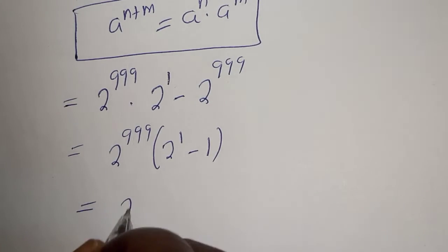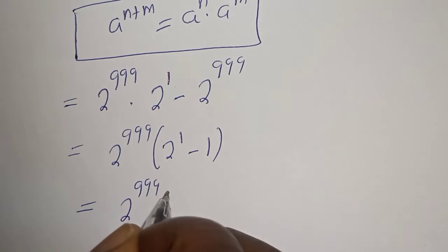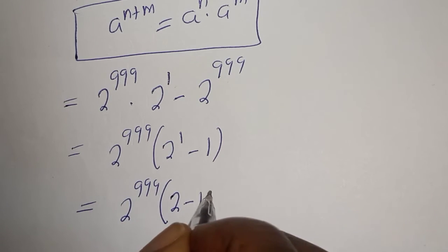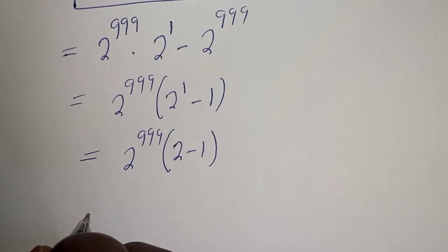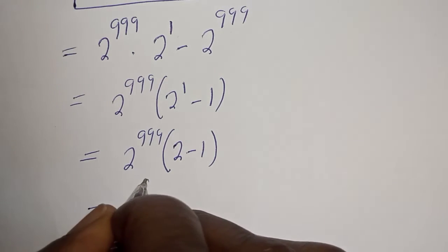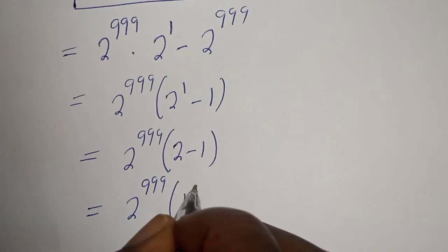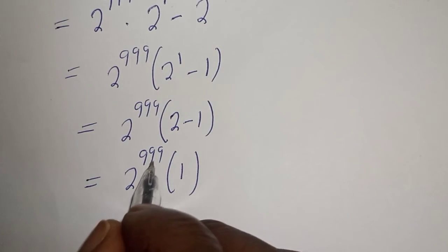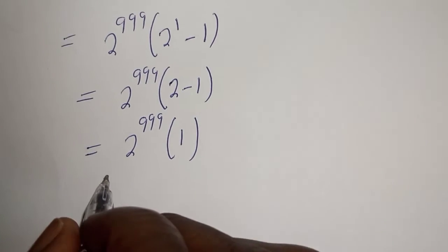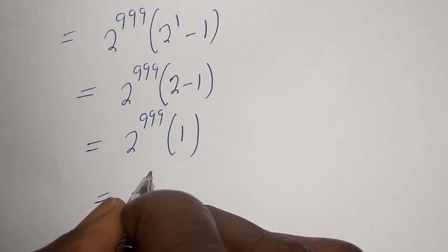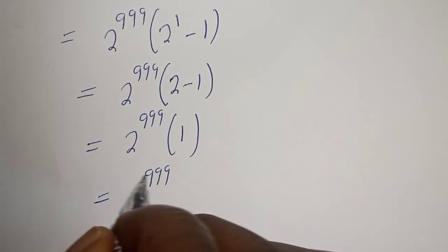Equal to 2 raised to power 999 bracket, 2 minus 1 is 1. And if you multiply 2 raised to power 999 by 1, this is equal to 2 raised to power 999. 2 raised to power 999, and this is the final answer.